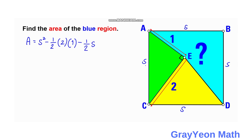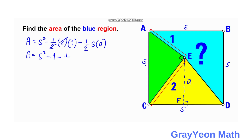We consider S as the base of the yellow triangle, and the height is the unknown perpendicular length from point E downward — we label this length as A and the foot of the perpendicular as L. Simplifying, area equals S squared minus 1 minus one half times S times A. We set this equation aside.